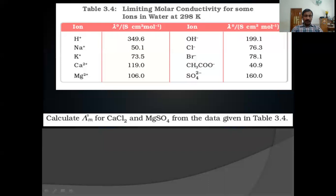Last we discussed Kohlrausch's law, so today we'll see its applications. What was the statement of Kohlrausch's law? At infinite dilution, when dissociation is complete, each ion makes an independent contribution towards the molar conductance of the electrolyte. Or we can say, at infinite dilution, molar conductance of an electrolyte is equal to the sum of the individual molar conductance of the ions present in it.